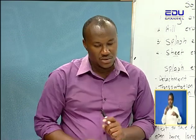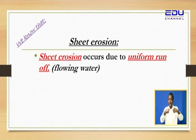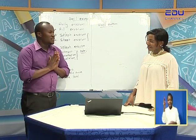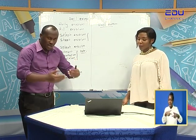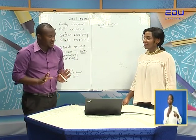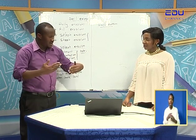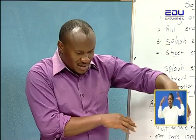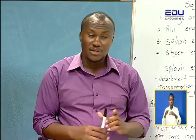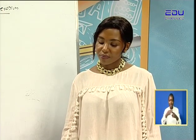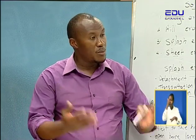Sheet erosion occurs due to uniform runoff. Uniform runoff is flowing water that flows down uniformly, especially on slopey land which has been freshly cultivated. Once you cultivate from top going down and it rains heavily, it's going to carry everything down — including plant remains, organic remains. Those organic remains are the best; they form compost manure, and once they decay they become humus, which makes the soil very fertile. It is always advisable to use compost manure rather than fertilizers.